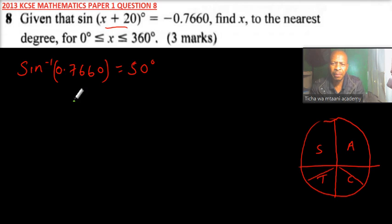Then from there, to get the angle equivalent to this in that quadrant, then we say x plus 20 is equals to, this is 180 degrees plus 50.